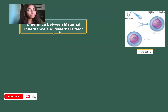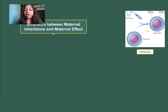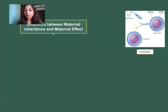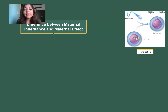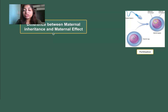Before I explain the difference, let's look at the process of fertilization. At the time of fertilization, there is a haploid sperm that will fuse with a haploid egg, and then the diploid zygote will be formed. The sperm will inject its nucleus inside the egg, and the male pronucleus will fuse with the female pronucleus to form the diploid nucleus of the zygote.